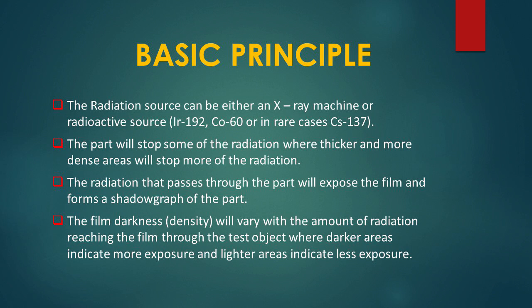The basic principle of radiographic testing is that penetrating radiation is passed through a solid object onto a photographic film, resulting in an image of the object's internal structure being deposited on the film. The amount of energy absorbed by the object depends on its thickness and density. Energy not absorbed by the object will cause exposure of the radiographic film, and these areas will appear dark when the film is developed. Areas of the film exposed to less energy remain lighter.